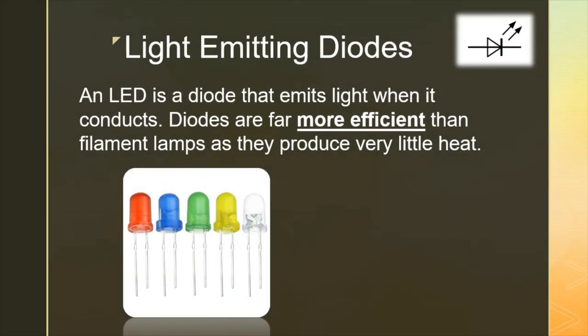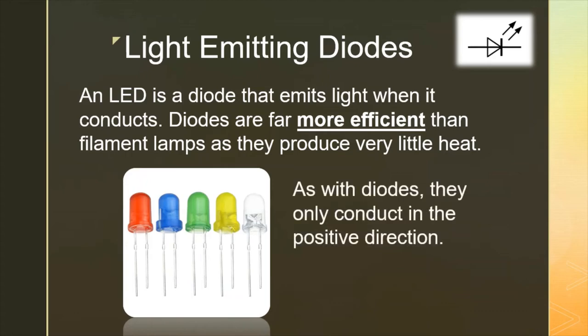A light-emitting diode, or LED, is a diode that happens to emit light when a current flows through it. The biggest benefit of using an LED over a normal filament lamp is that it is far more efficient — it's not relying on the filament getting incredibly hot, so it produces very little heat in comparison. It is really important to remember that, as with diodes, LEDs only conduct in the positive direction. If you connect an LED in the negative direction, you're not going to get any light emitted and no current will flow — it is still a diode; it just emits light when current flows through it in the positive direction.